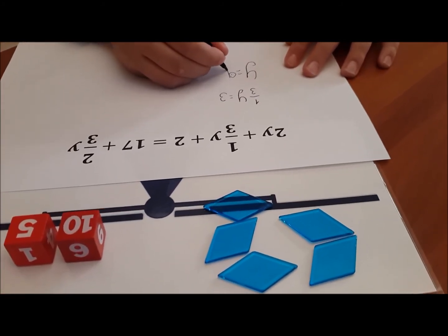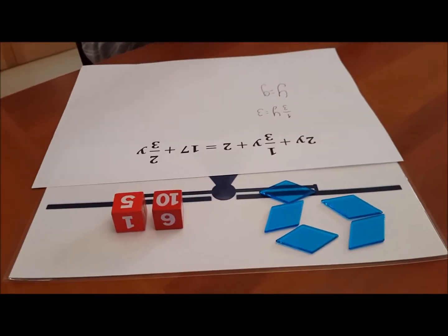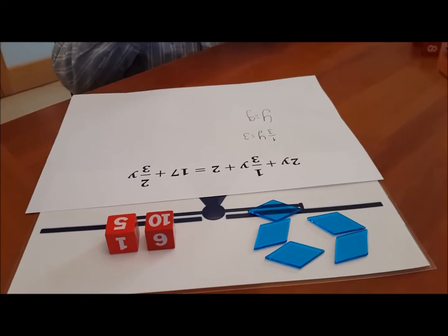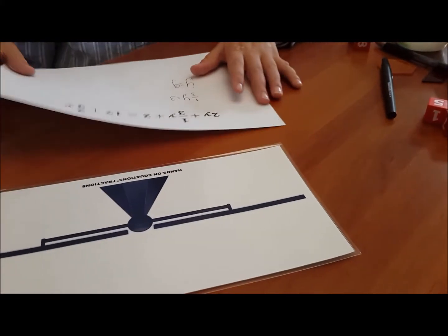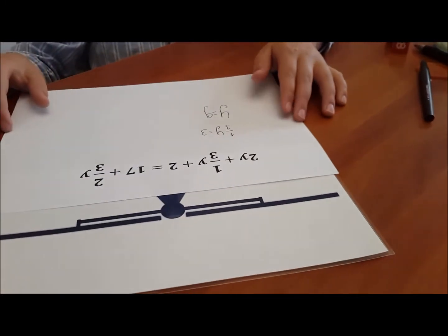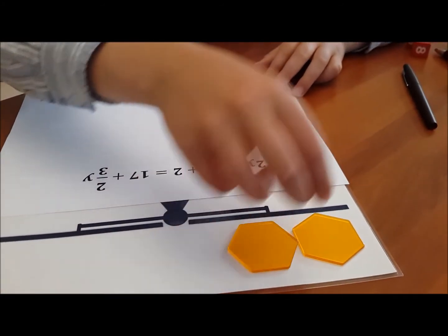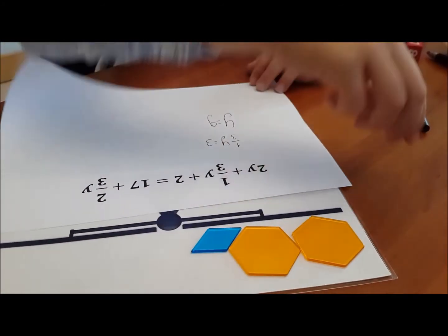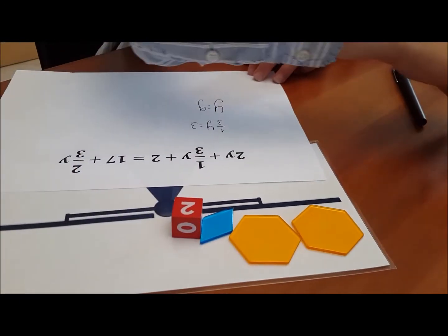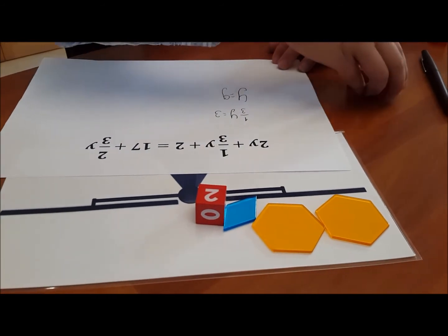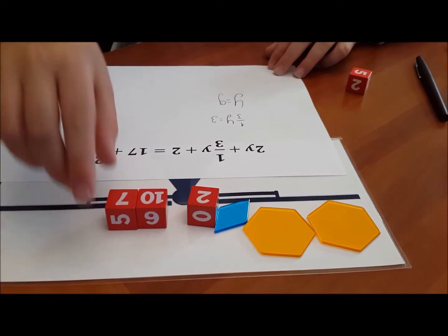So now we know 1 third of y is 3 and we know y is 9, so all we have to do now is do the check. Please clear the board and let's set up the original problem one more time to see if both sides have the same value. There you have 2y plus 1 third of y plus 2 equals 17 plus 2 thirds of y.